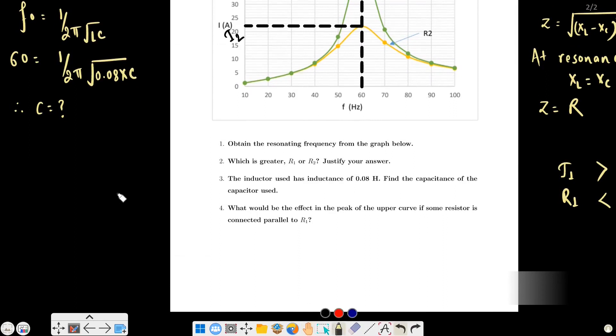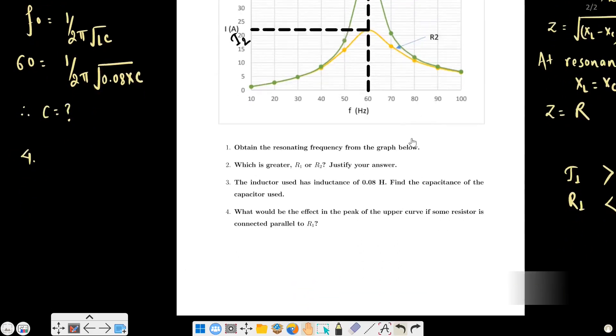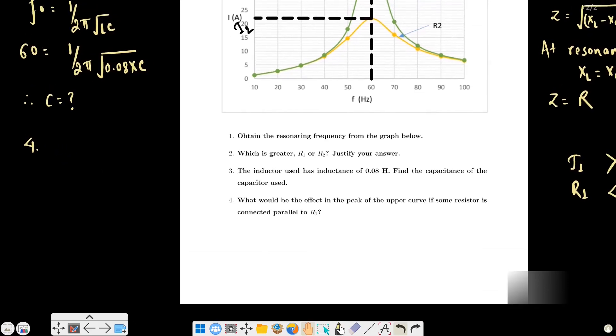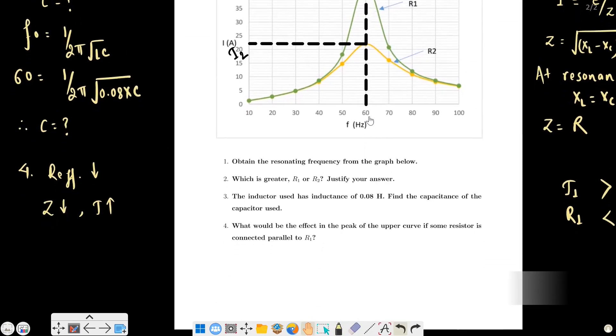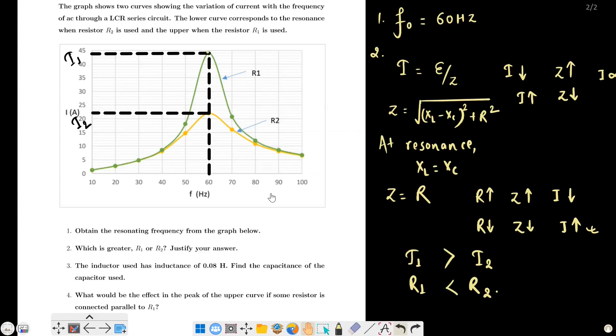Question four: what would be the effect on the peak of the upper curve if some resistor is connected parallel to R1? When you connect in parallel, resistance decreases, so effective resistance decreases. R effective decreases means Z decreases, so I increases. The peak will become sharper and higher. This is all for today, have a good time and keep loving physics, thank you.